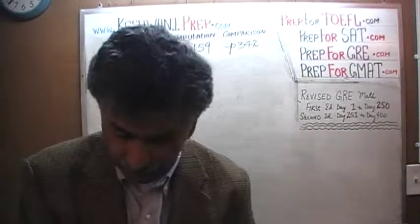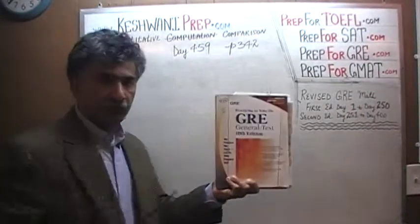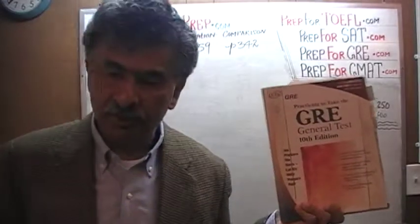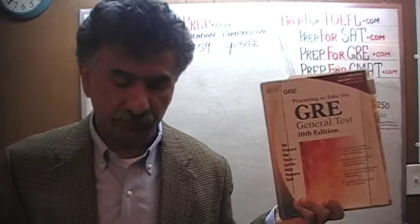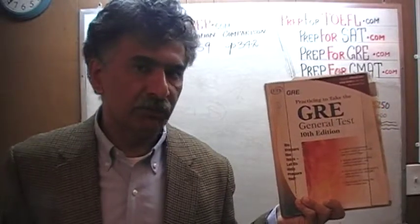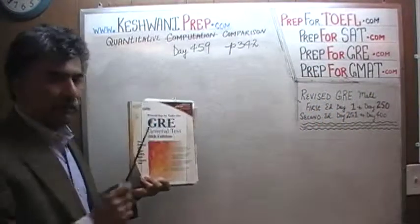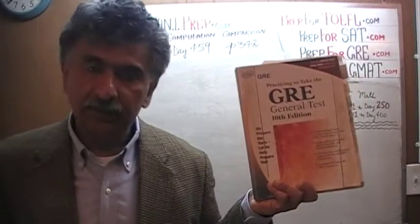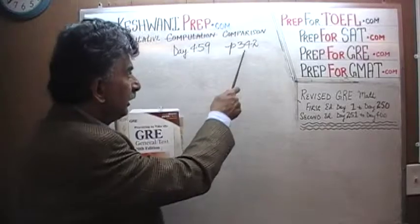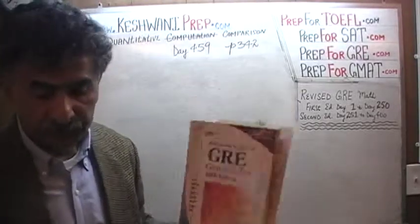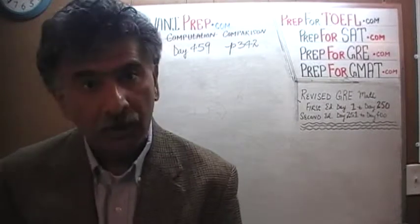Right now we are in the process of solving some quantitative comparison questions. Quantitative comparison questions are still a very big chunk of the exam — they have not gone away. Unfortunately, the newer books do not provide us with sufficient practice problems. For that reason, from day number 401, we began solving quantitative comparison questions out of this book here, the tenth edition of the GRE. We are right now on page number 342. Please turn to it — problem number 11.